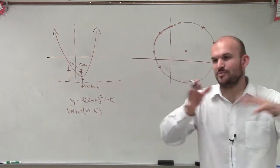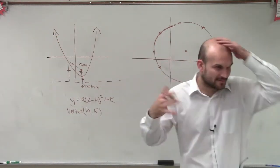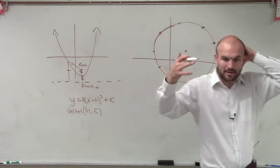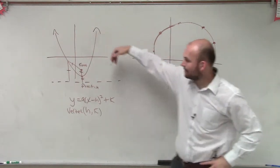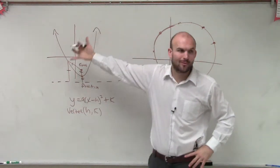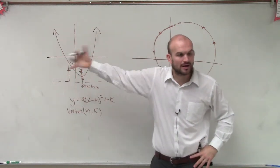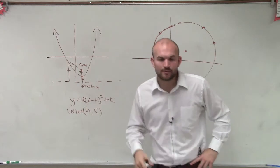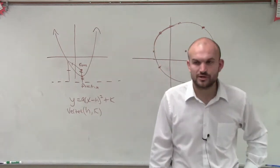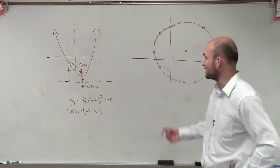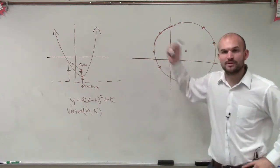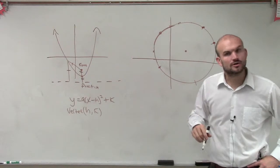A told you if the graph opened up or down, and so on. But that was for a parabola. So now what I want to do is show you guys how we can determine a formula for a circle.